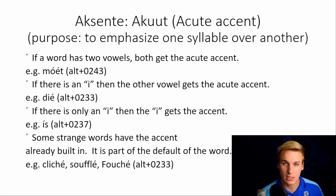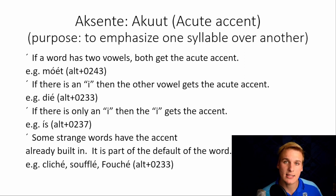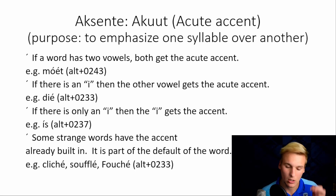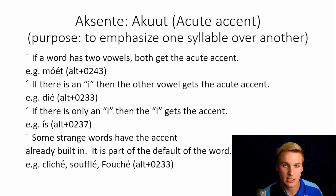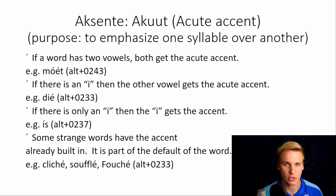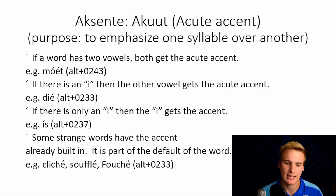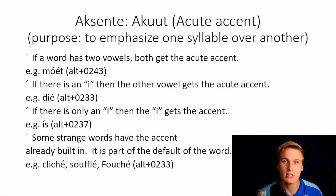And then we have the accent — two types: the aksent and the grafis. The aksent, or in English the acute accent, is used to emphasize a syllable over another. For example, nóg — not yet. If a word has two vowels, both get the acute accent. For example, móét — the boy must kick the ball. If there is an i, the other vowel receives the acute accent.